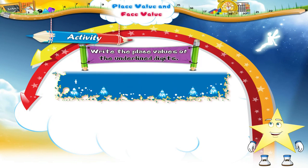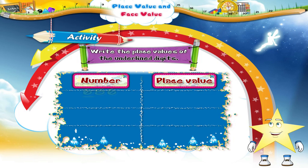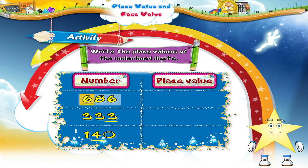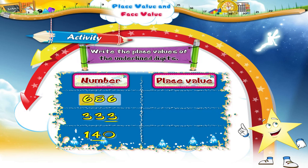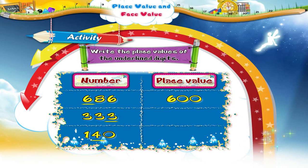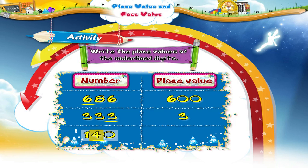Now write the place values of the underlined digits. The place value of six in six hundred and eighty-six is six hundred. The place value of three in three hundred and thirty-three is three. The place value of four in one hundred and forty is forty.